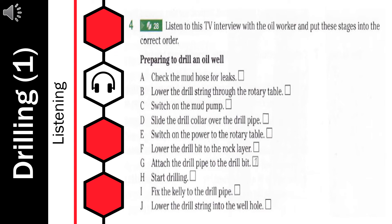And then we made up the pipe with the kelly — meaning we joined the kelly to the drill pipe. Then we lowered the string. The string is the drill bit, the collar, the drill pipe, and the kelly all joined together. The whole string rotates inside the well hole. We lowered the string — the kelly, the drill pipe, the drill collar, and the drill bit — through the rotary table until the kelly fitted tightly in the hole in the rotary table.